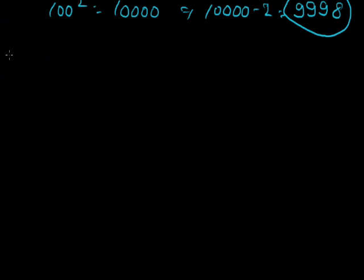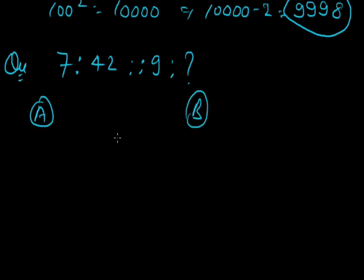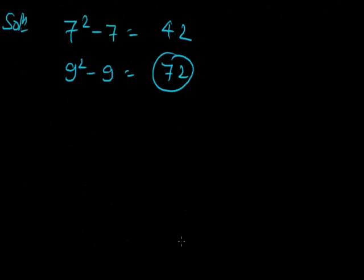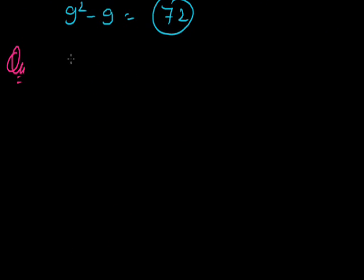Next question: 7:42::9:? Here options: 56, 72, 82, and 86. Solution: 7 square minus 7, that is 42. And 9 square minus 9, the 9 square is 81 minus 9, is 72. Answer is 72.